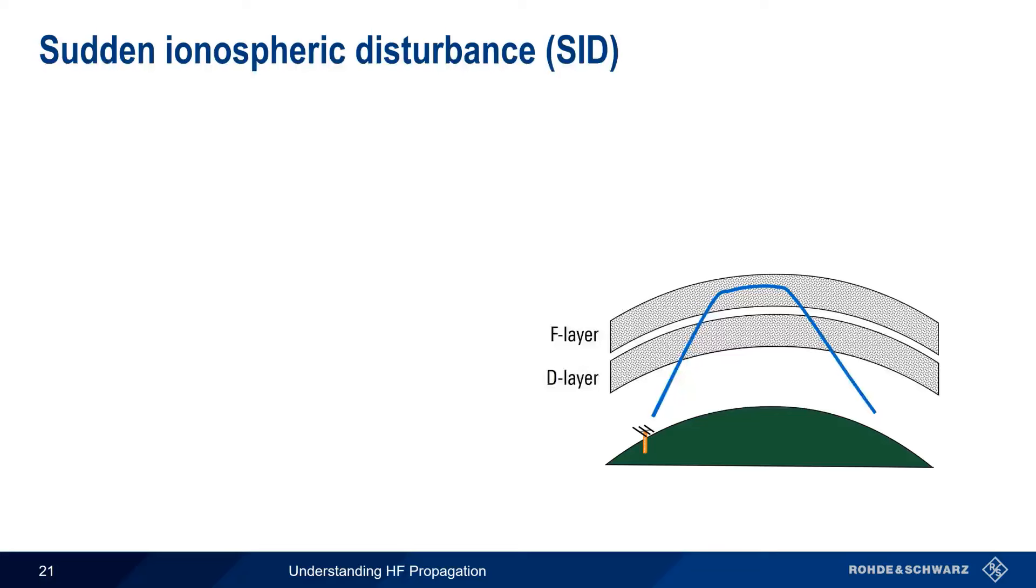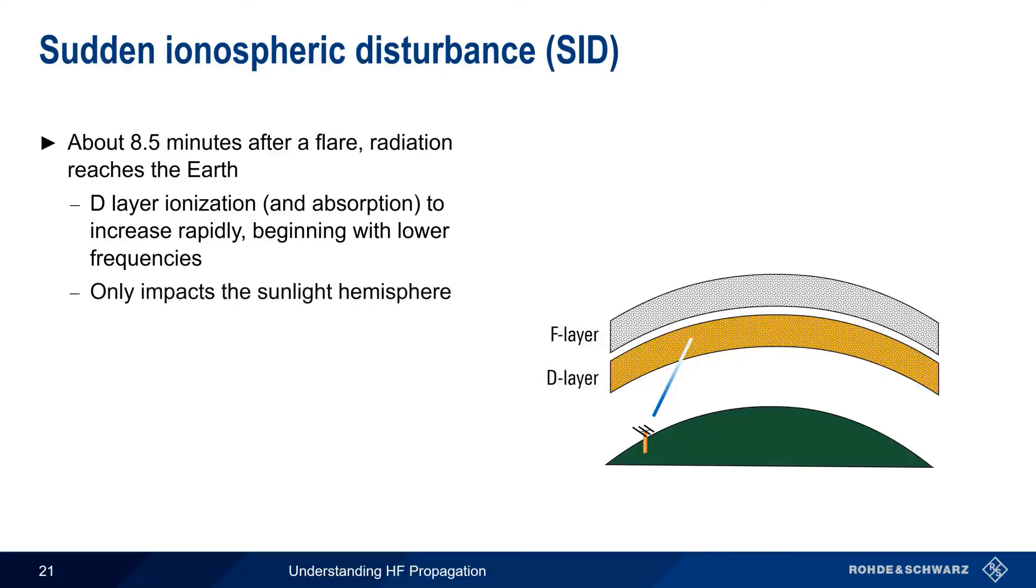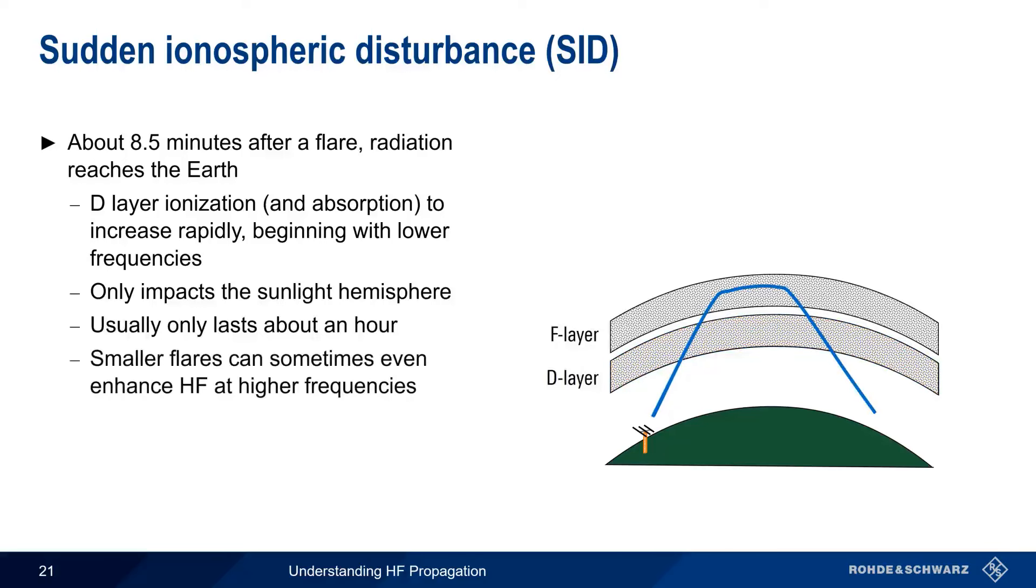As the name implies, a sudden ionospheric disturbance is sudden. It occurs about 8.5 minutes after a flare, that is, at the same time the flare becomes visibly detectable on the Earth, and is caused by the arrival of solar radiation. This radiation causes d-layer ionization, and hence d-layer absorption, to increase rapidly, starting at the lower frequencies and moving upwards. The affected frequencies are often almost completely blacked out. Fortunately, a sudden ionospheric disturbance only impacts the sunlit hemisphere, and tends to last a relatively short time, typically an hour or so. And in some cases, smaller solar flares can actually enhance HF propagation, by increasing ionization at higher frequencies, without a corresponding increase in d-layer absorption.